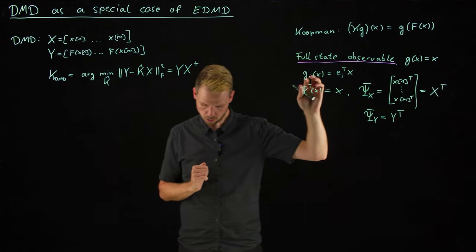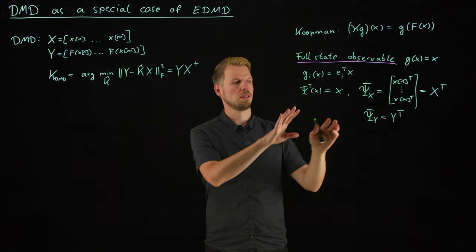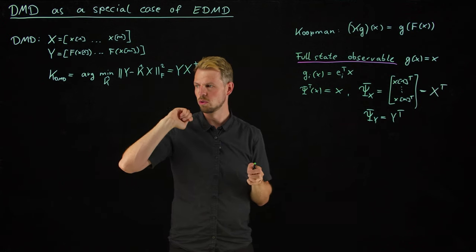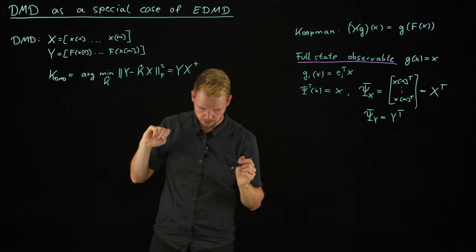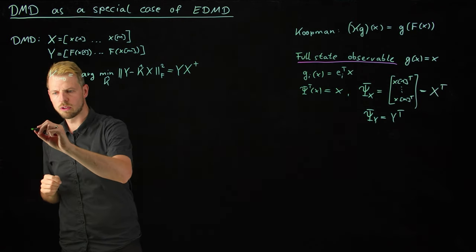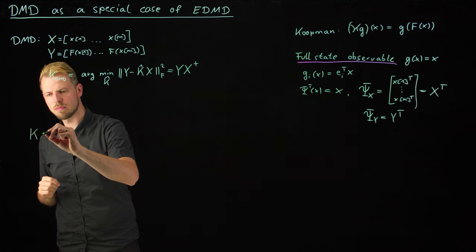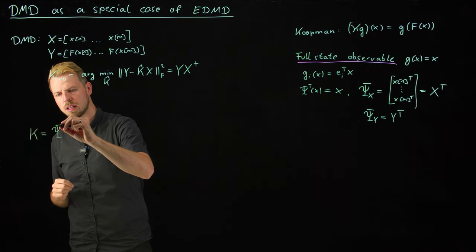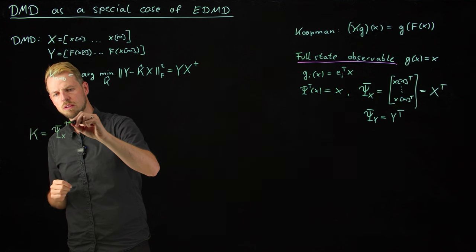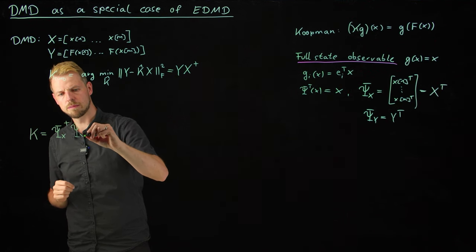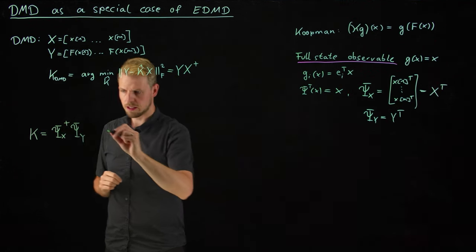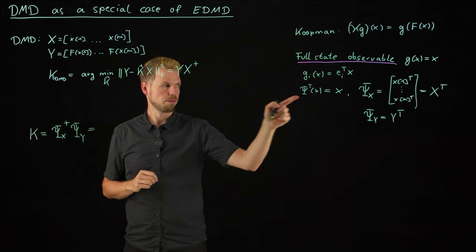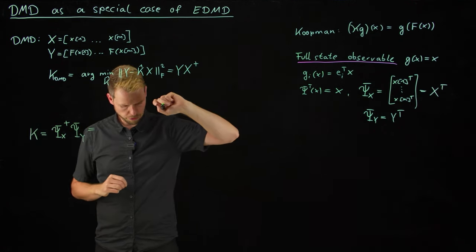Nevertheless, if we proceed this way, then we can just study how the Koopman matrix K is computed and put this in relation to the K_DMD matrix. So the Koopman matrix K, and I'm not going to derive this again, but we have seen this, is psi_x pseudo inverse times psi_y. And what I can do now is I can insert my definitions here.